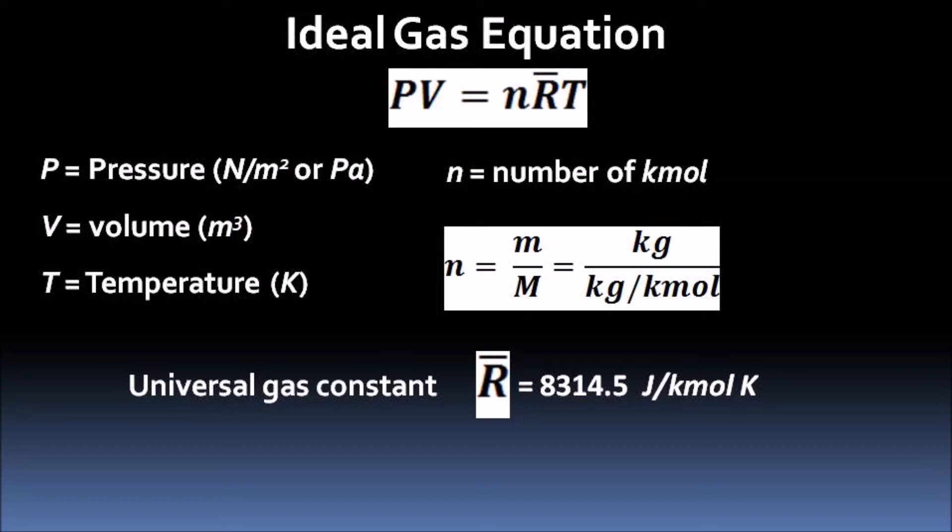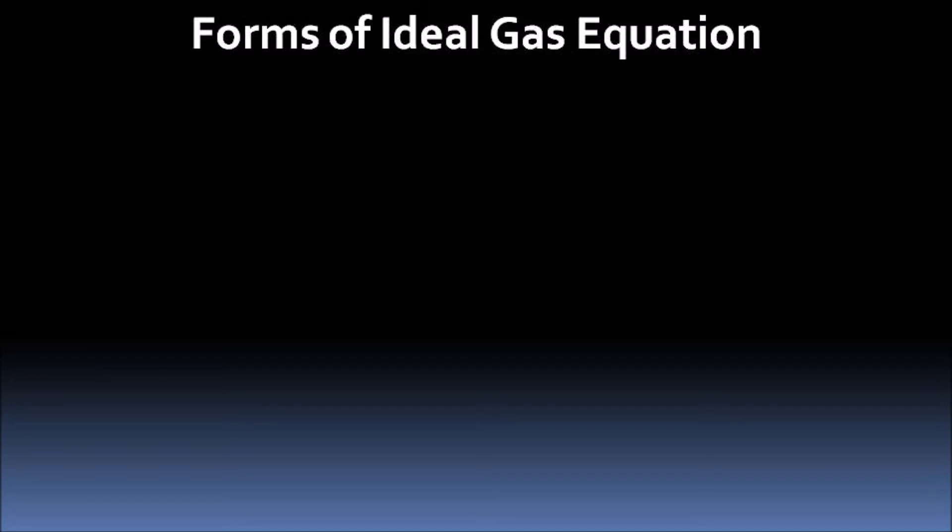The ideal gas equation can be transformed into various forms to make it useful for special situations. These different forms do not actually change the equation, but they make the handling of different variables quite easy.